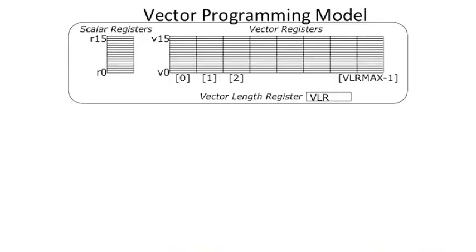Let's get started looking at vector processors, and look at the programming model first before the architecture. In a traditional vector architecture, you have some scalar registers — like in a normal microprocessor, they hold one value, maybe 32 or 64 bits wide. Then you have a second register file which holds vectors.